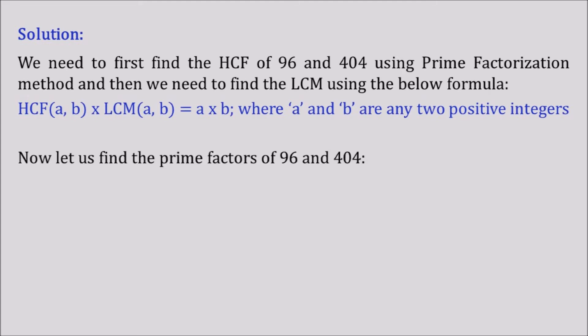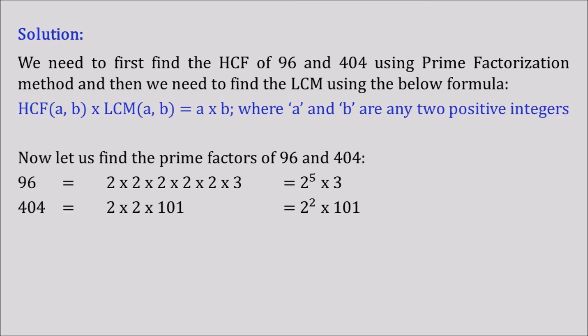Now let's find the prime factors of 96 and 404. So 96 = 2 × 2 × 2 × 2 × 2 × 3, which we can write as 2⁵ × 3. Both 2 and 3 are prime numbers, so this satisfies our condition. Moving to 404, we can see that 404 = 2 × 2 × 101, which equals 2² × 101. 101 is also a prime number.